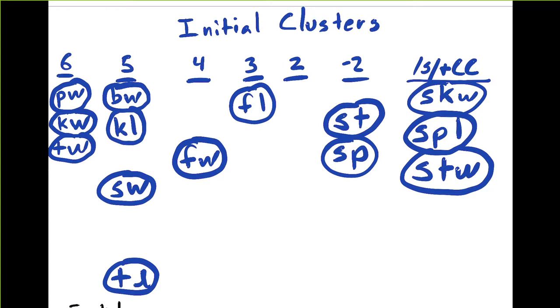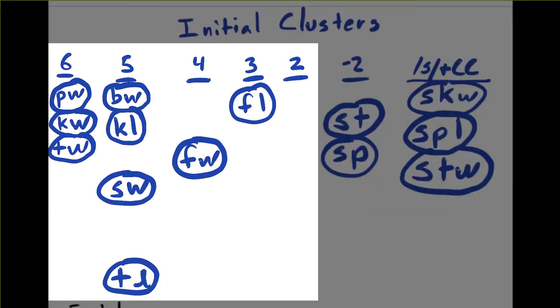Now our task is to identify what is this child's minimum sonority distance. For considering minimum sonority distance, we're generally considering two element clusters and only those that are true consonant clusters. We're just going to look at these true two element consonant clusters and look for the smallest sonority distance that the child demonstrates. And that would be a distance of three because the child has FL in their inventory, which demonstrates that they can reduce consonant clusters with as small of a sonority distance as three.